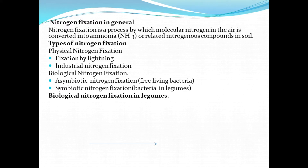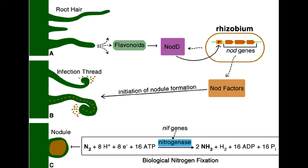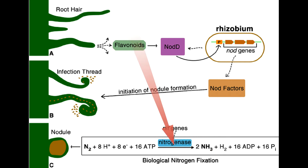Now let's take a look at biological nitrogen fixation in legumes, which is the main focus of your syllabus. Biological nitrogen fixation is a process whereby atmospheric nitrogen is reduced, or converted, to ammonia.